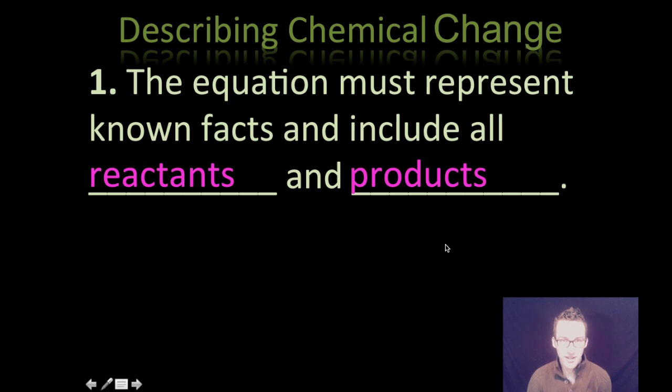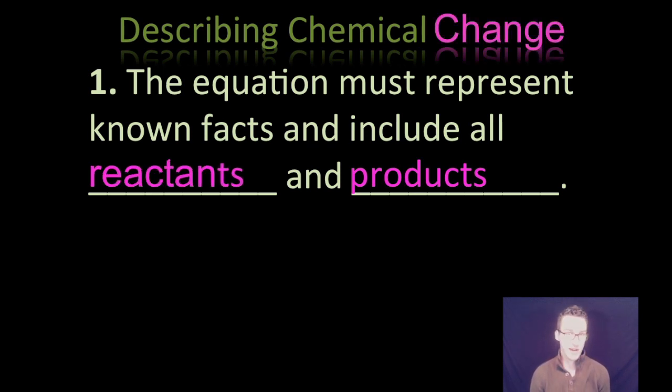When writing chemical equations, first you must include all known reactants and all known products. Seems easy enough, but you do have to be careful. Many times when you are doing reactions in open containers, you have byproducts that react with the things that are in the air.